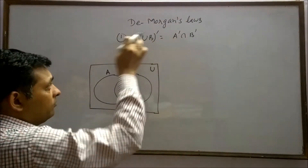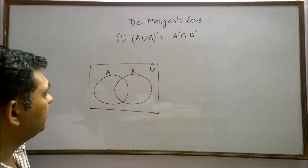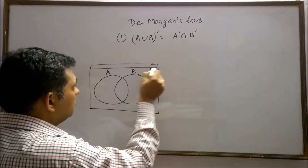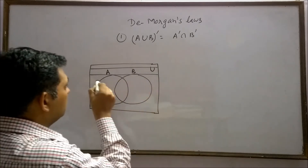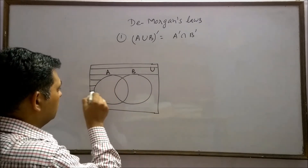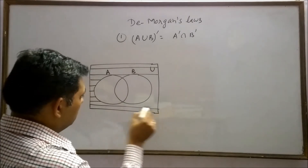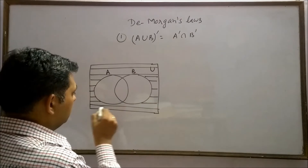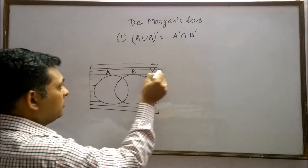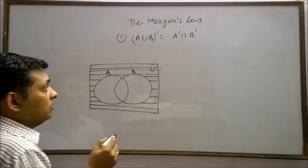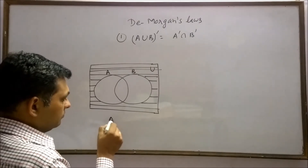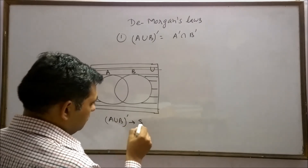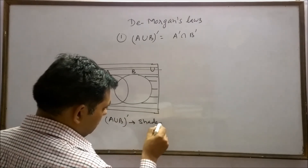Whole complement of A union B means the region except A union B. This shaded region represents the whole complement of A union B.